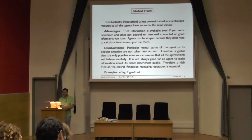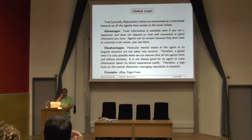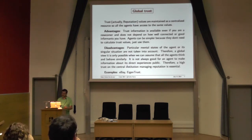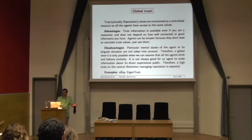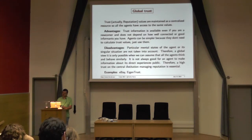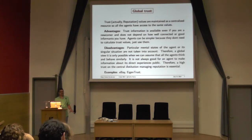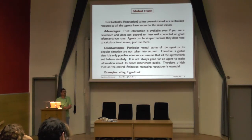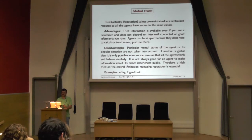There is another issue with global trust: it's not always good for an agent to make information about its experiences public. Sometimes I don't want to tell whether a particular experience with a hotel or a customer was good or bad. Global trust relies on everybody telling what their experiences were. There is also a need to trust the institution managing the reputation — not to lie to you, not to change the trust values. You always have the question: can I be sure that this is really the truth? As examples of global trust you can see eBay — people say their experience was good or bad, and basically it's an average of those experiences.